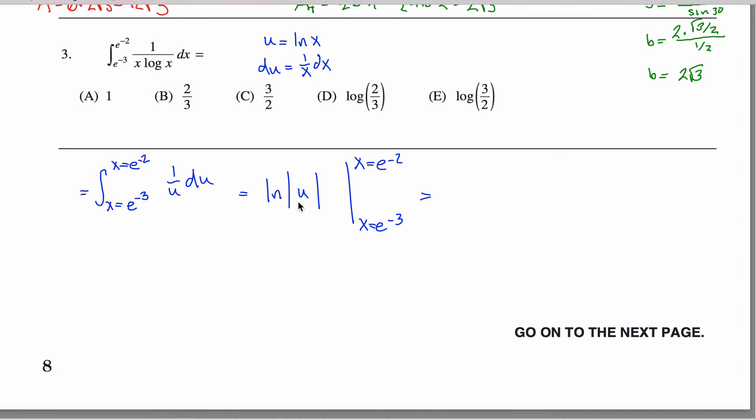From x equals e to the negative third to x equals e to the negative second. Now I'm going to switch my variable back to an x, instead of u, I'm going to write natural log of x, so I'll say that this is the natural log of the absolute value of the natural log of x, and I want to evaluate that thing from, sorry for all the vertical lines, e to the negative third, and e to the negative two.